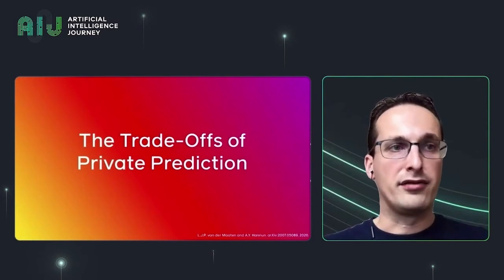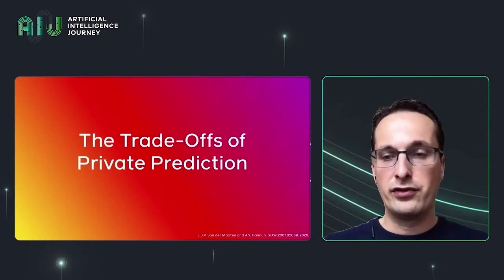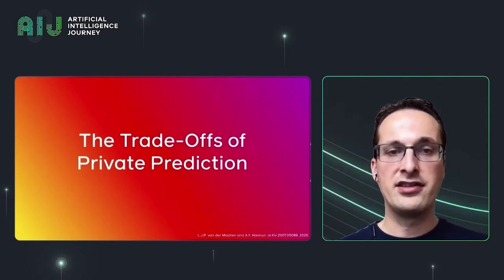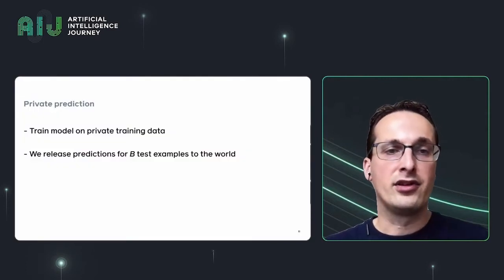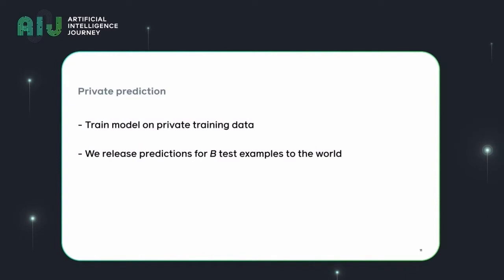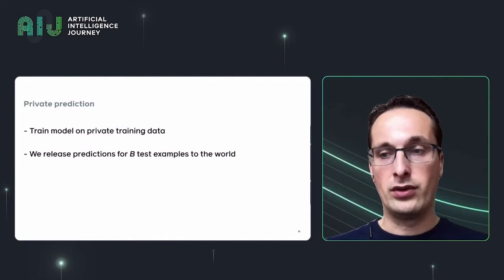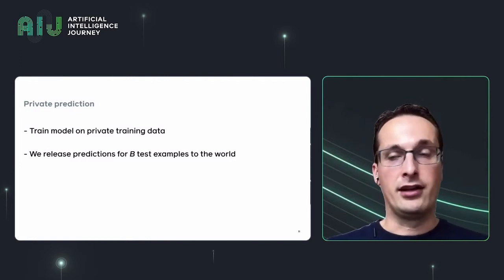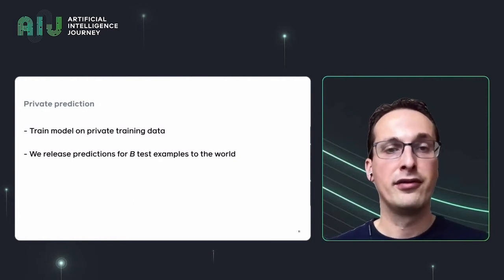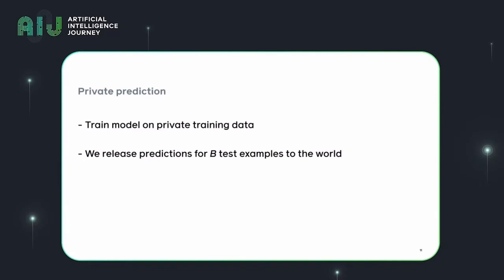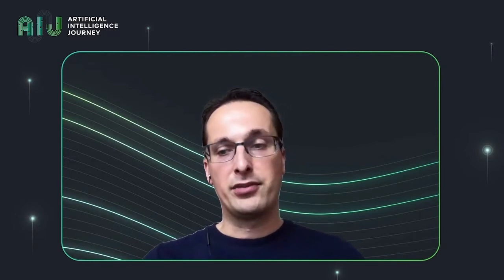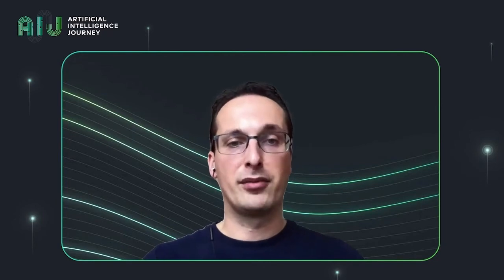Now that you have that background on differential privacy, we're ready to move to the first topic of this talk, which studies the trade-offs of private prediction. This is about the problem where we train a model on private training data and keep the model private — not releasing the model to the world — but we are going to use the model to release predictions for B test examples into the world. This could happen, for instance, in a cloud service where you as a cloud provider have trained a model and you're not actually releasing it. Users can upload test examples to your model and in return you give them predictions for those test examples. In that process, through the predictions, you may be leaking information about the private training data.